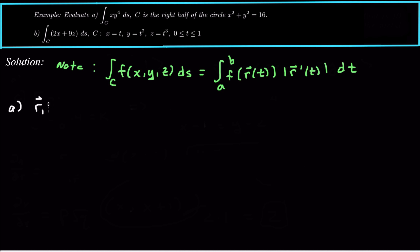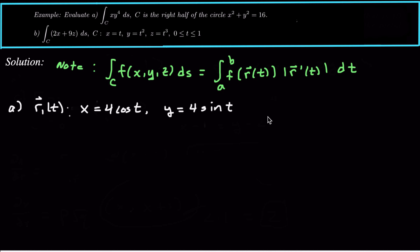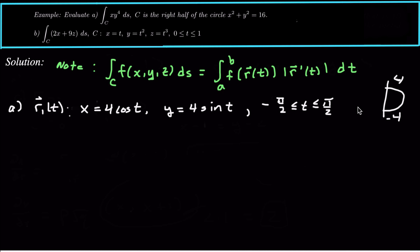So r1(t) is a circle of radius 4. To parameterize a circle of radius 4, we let x equal 4 cosine of t, and y equal 4 sine of t. Now if we want the right half of the circle, from negative 4 to 4 on the y-axis, that's going to be t ranging from negative pi over 2 to pi over 2. That is our parameterization for this curve C — the curve is just this semicircle to the right of our y-axis.